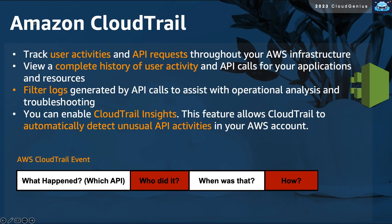Amazon CloudTrail is your option if you would like to start collecting audit trails, or what is known as user logs or user activity logs. CloudTrail can track every single API and activity executed by every user on any resource in your account, enabling you to view the complete history of your user's activity. Filtering through these logs by user name, API action, or resource ID can be very helpful while troubleshooting and can assist a lot with operational analysis. CloudTrail has a feature you can enable called CloudTrail Insights, which allows CloudTrail to automatically analyze the collected logs and automatically detect unusual and abnormal user activities and raise an alarm about that.